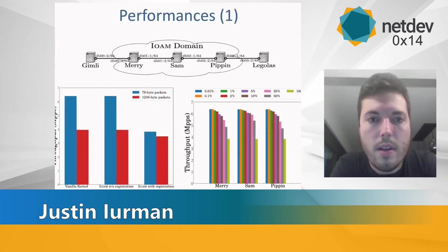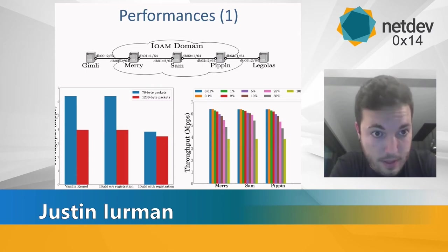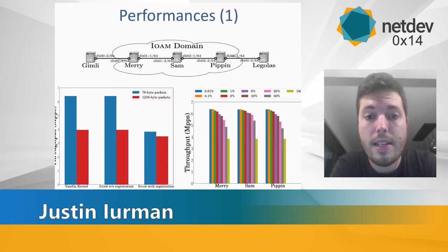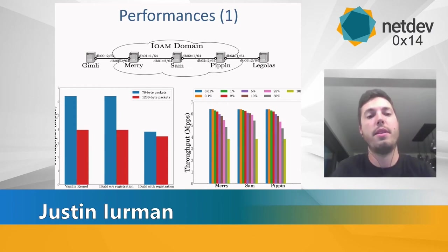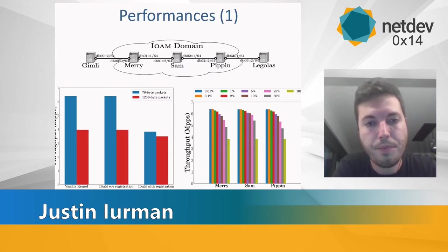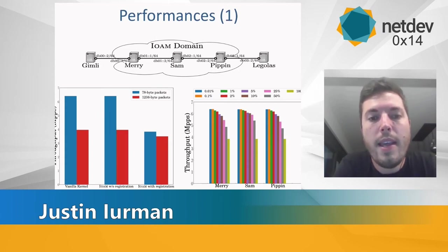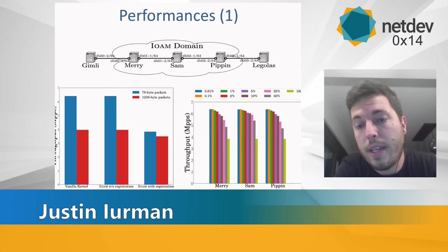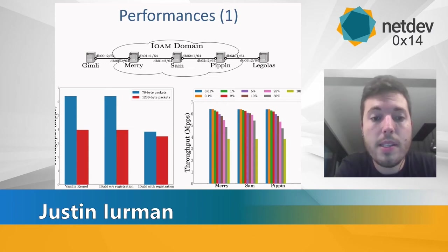Let's review some early performance results. Tolkien fans will appreciate the testbed: Gimli on the far left is the traffic generator and Legolas is the traffic receiver. Merry and Pippin are respectively the ingress and egress of the IOAM domain, and Sam is an IOAM transit node. Merry receives traffic from Gimli, encapsulates it with an outer IPv6 header, inserts IOAM data in the outer header, then Merry, Sam, and Pippin each insert their data. Pippin finally decapsulates the packet so Legolas receives it untouched.